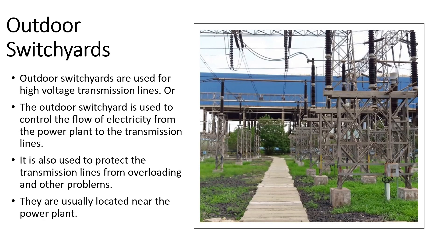Outdoor switchyards are used for high-voltage transmission lines. The outdoor switchyard is used to control the flow of electricity from the power plant to the transmission lines. It is also used to protect the transmission lines from overloading and other problems. They are usually located near the power plant.